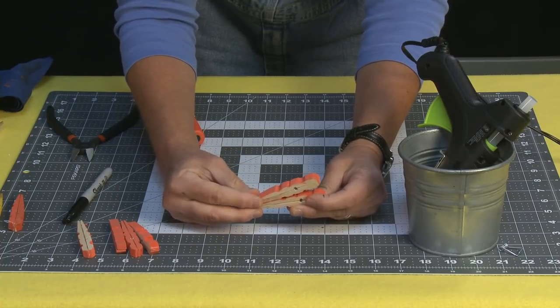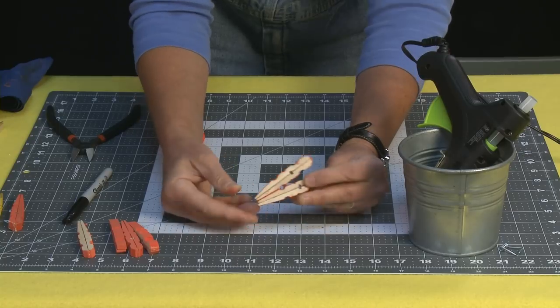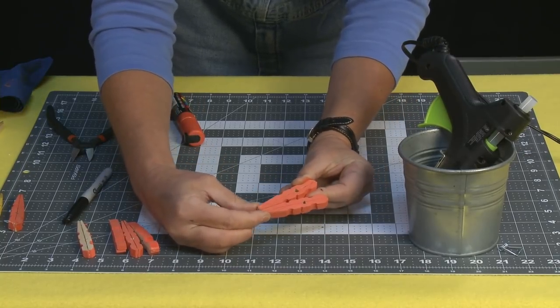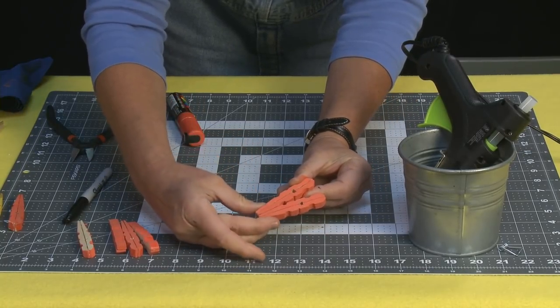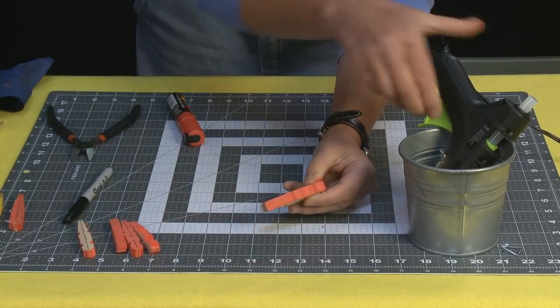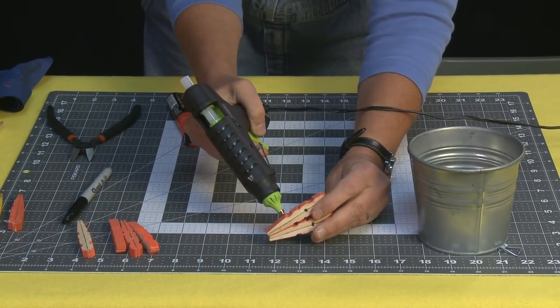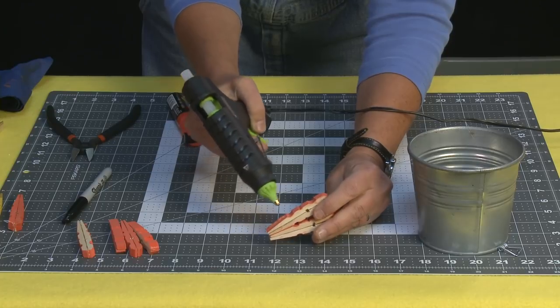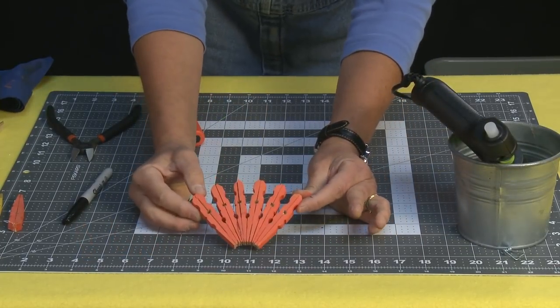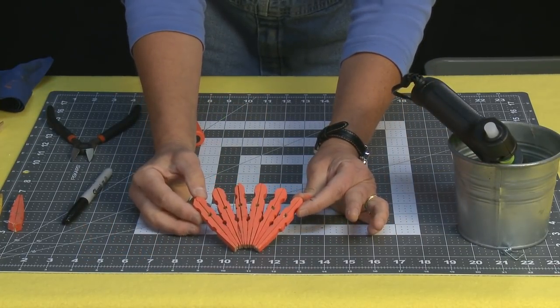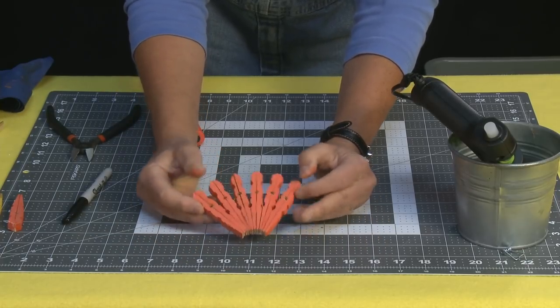There we go. And you want to make sure that you're flush right here. That these two are flush. So you're going to get like a little letter V going on. I'm going to do this for all six. Now once you're done it looks kind of like a little fan or a little sunrise. Let that dry really really good.